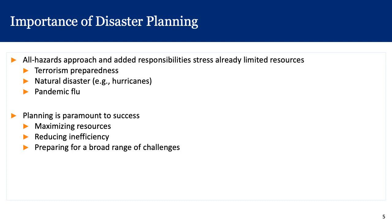When we talk about disaster planning, the all hazards approach means we need to think about flexible systems like the Haddon Matrix that can be adapted for different types of emergent public health threats — whether terrorism preparedness, natural disasters such as hurricanes, or pandemics like COVID-19 or influenza. Because planning is paramount, we need to maximize limited resources in both disaster response and recovery. The Haddon Matrix allows us to strategically plan to reduce inefficiency across the all hazards continuum.